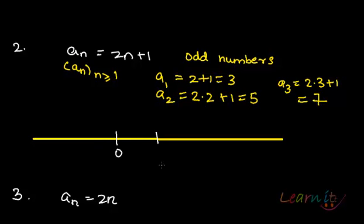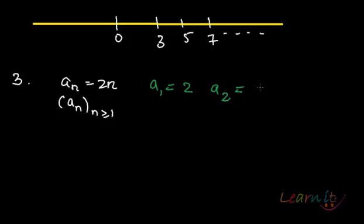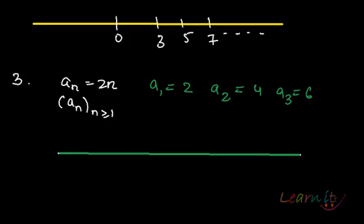On the real line you have 0 here, then 3, 5, 7 and on and on — this is the sequence of odd numbers. Similarly, you can also have a sequence of even numbers. Again if you have a_n where n is greater than or equal to 1, your a_1 equals 2, a_2 equals 4, a_3 equals 6, and so on. On the real line it will look like: 0 here, then 2, 4, and so on and so forth. This is what you mean by a sequence.